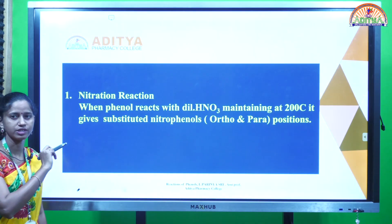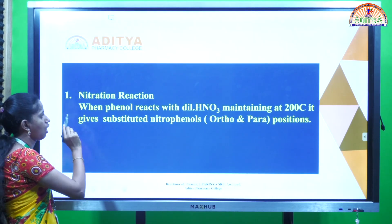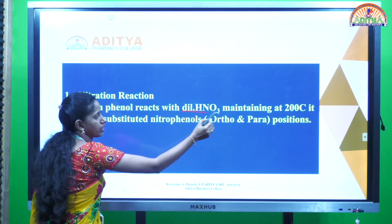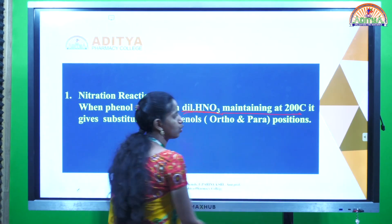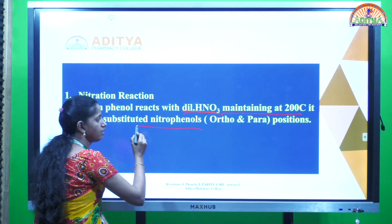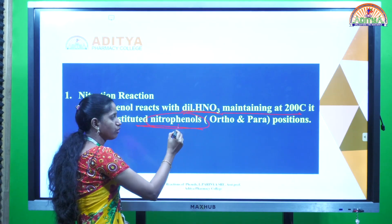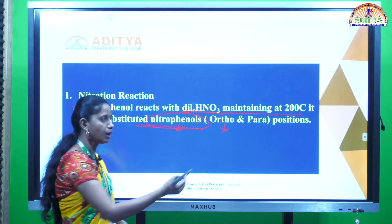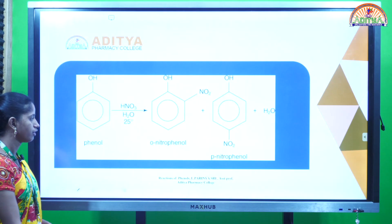The first reaction is the nitration reaction. In this reaction, when the phenols are reacting with dilute HNO3 by maintaining at 200 degrees centigrade, it is giving substituted phenols — mainly nitrophenols are forming. These nitrophenols are forming mainly at the ortho and para positions.